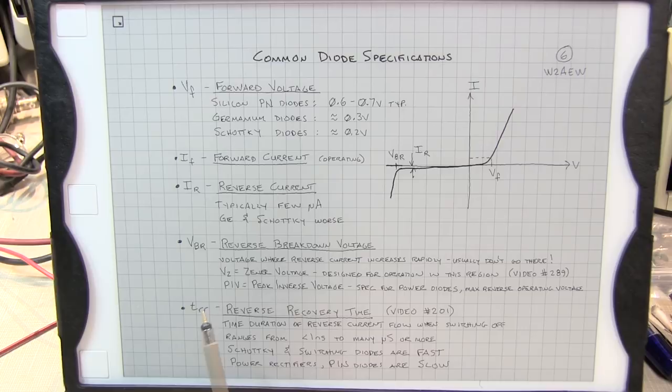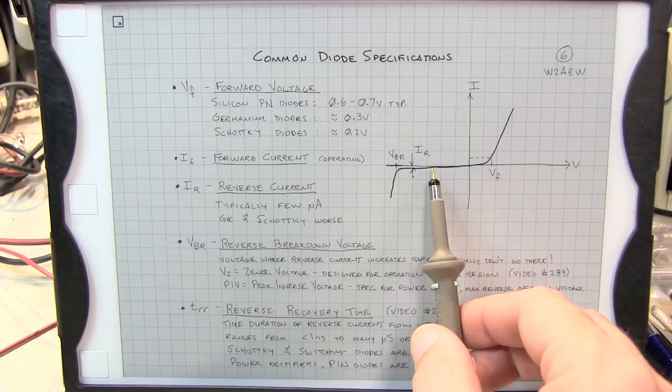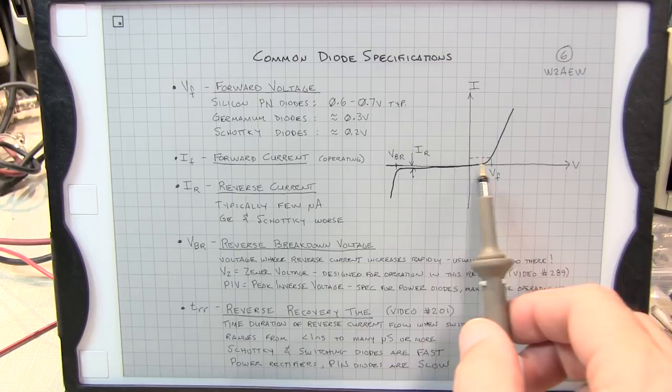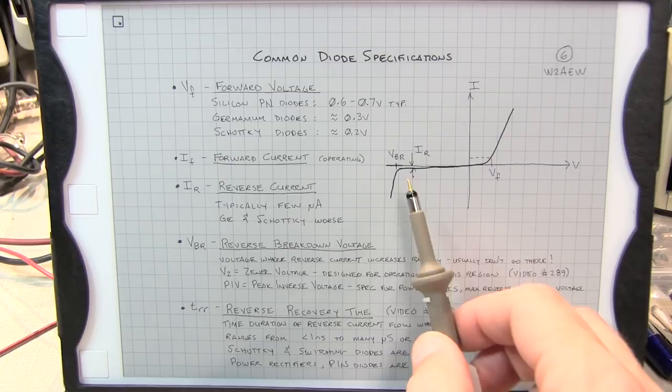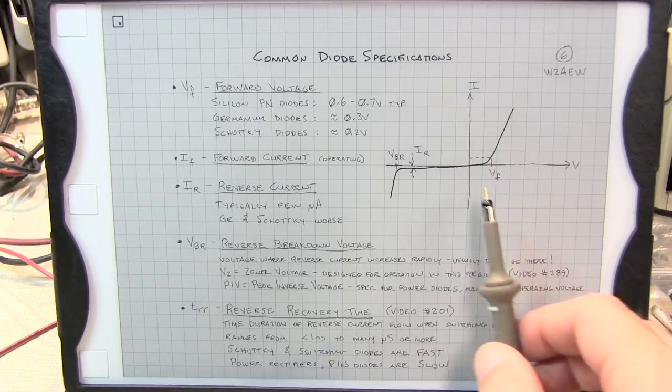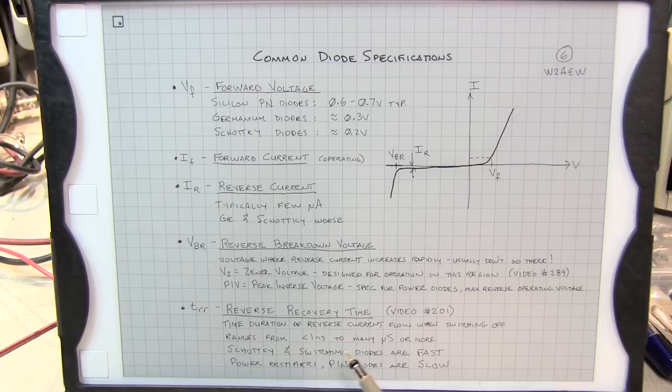We'll often see a spec sometimes for TRR, which stands for the reverse recovery time. Again, video 201 talks about this. And this is the duration of the reverse current flow when switching off. When you're going from turning on to turning off, you might say, well, the current should be zero. But as I mentioned in the previous slide there, there is some stored charge in the junction. So as you go from positive to negative, that stored charge has to be removed, and it gets removed in the form of current flowing. And that's called the reverse current. So the amount of time it takes for that current to exit out of the junction and the junction to turn off is called the reverse recovery time.